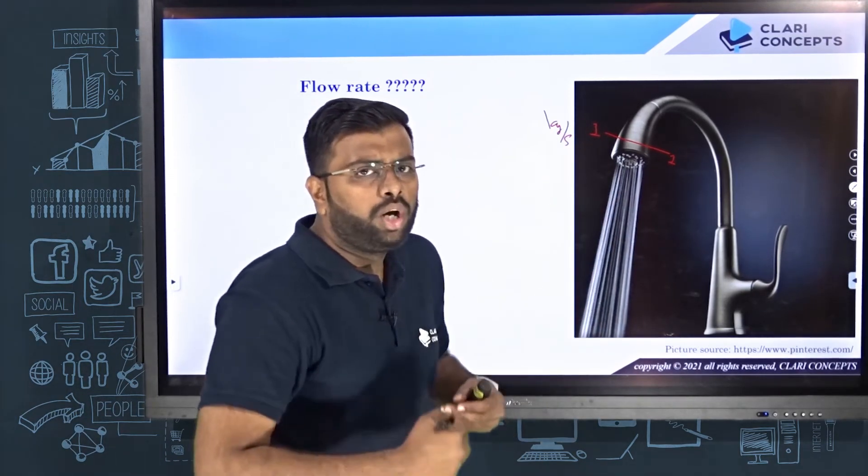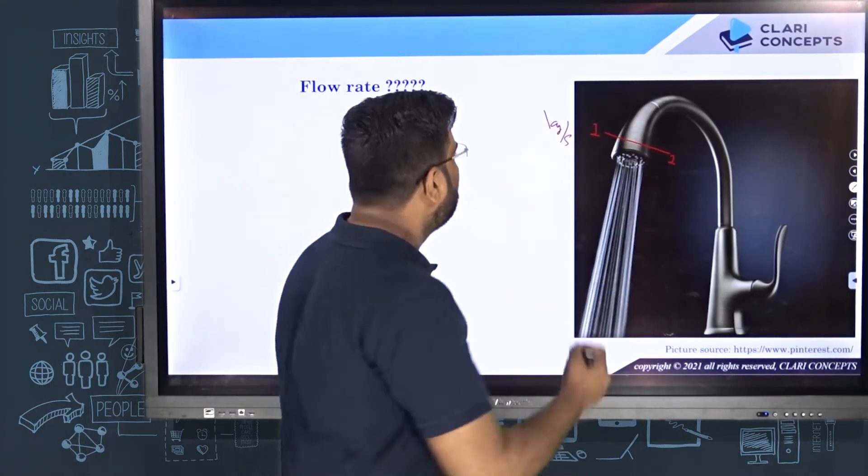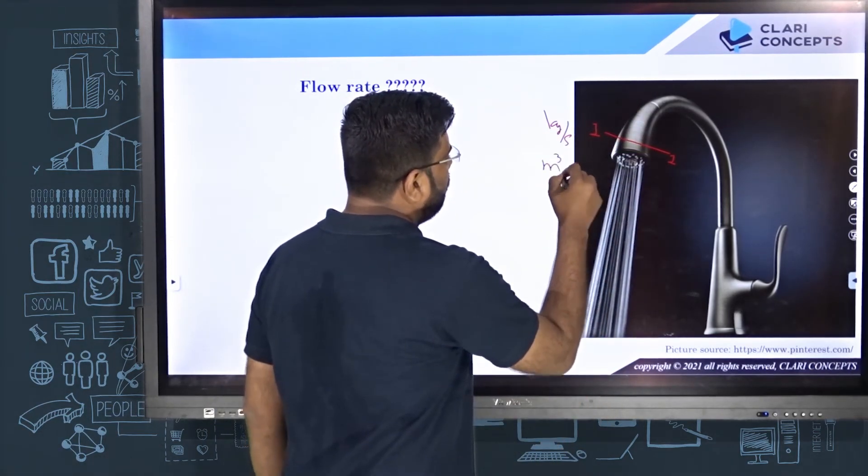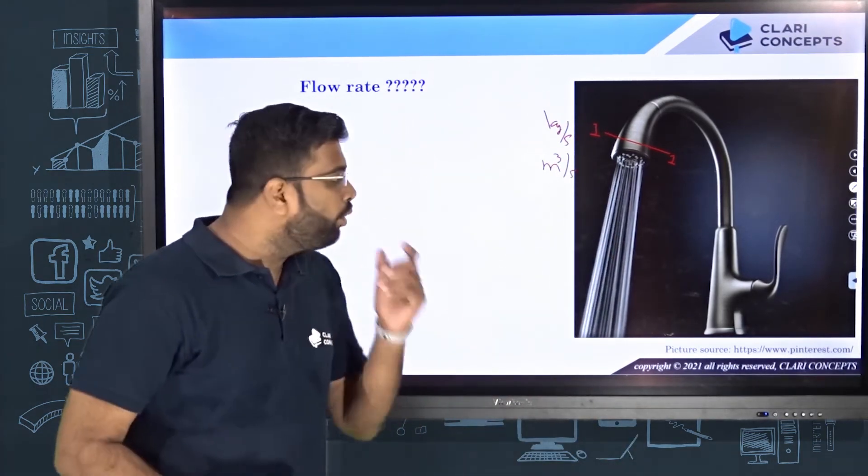If you calculate how much volume of water is flowing through this particular section every second, that is said to be the volume flow rate, which is in meter cube per second.